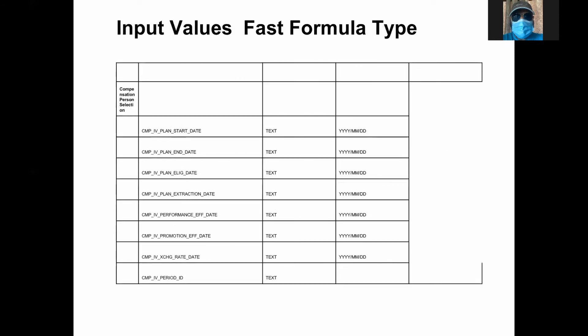Now we'll look at what input variables are supported. As I said, person selection is used in three places: compensation process, total compensation process, and grade step progression process — and all these places pass different input values. From the compensation process, the supported input variables include: plan start date, plan end date, eligible date, extraction date, performance effective date, promotion effective date, exchange date, and period ID. They probably also support plan ID. This is a sample, so we'll see in detail what other things are supported. If you look at my blog, it is already given there.